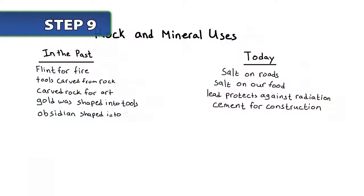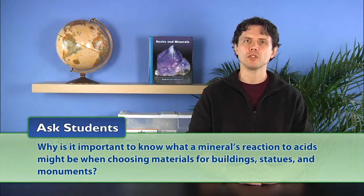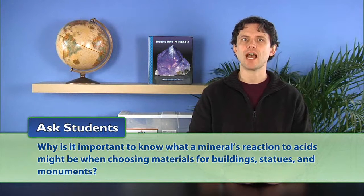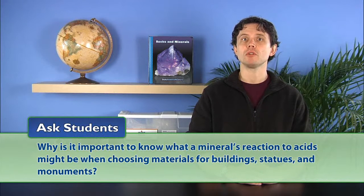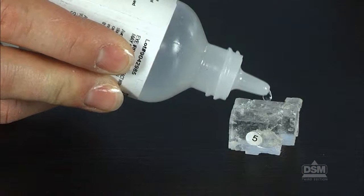Tell students to continue adding examples to their lists of the different ways that rocks and minerals are used today and how they have been used in the past. Ask students: why is it important to know what a mineral's reaction to acids might be when choosing materials for buildings, statues, and monuments? Elicit from the class that if a certain mineral dissolved in vinegar, it would not be a good idea to use that mineral in the construction of buildings where acid rain or precipitation containing acid chemicals is common.